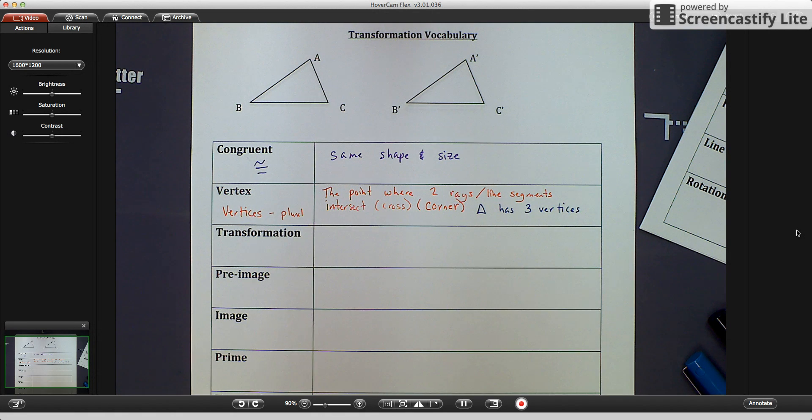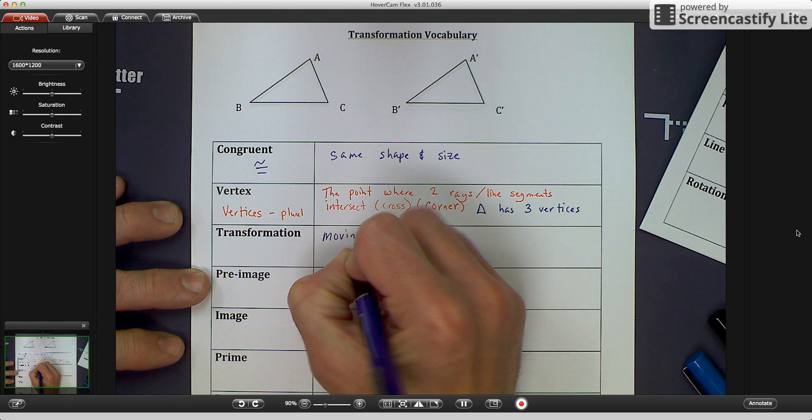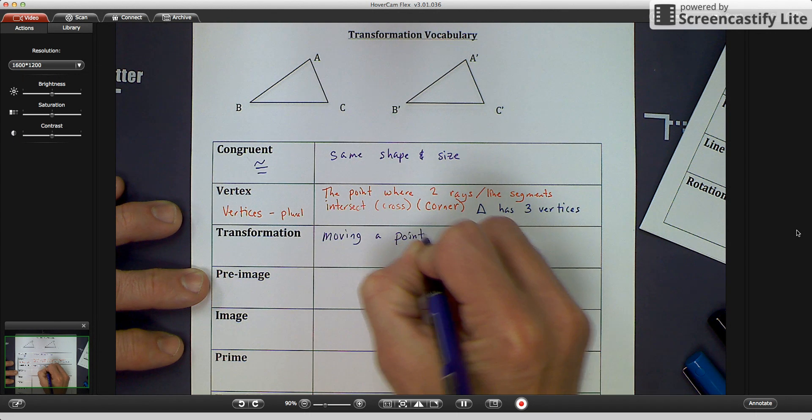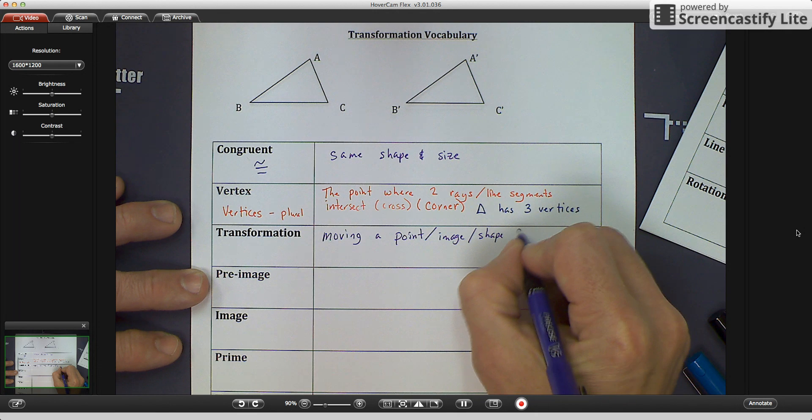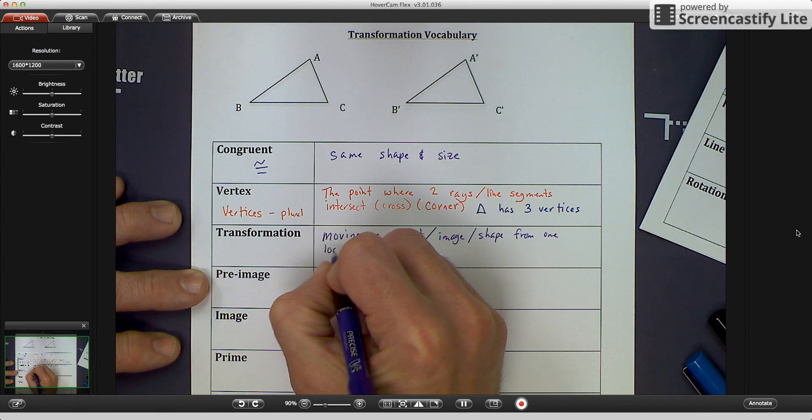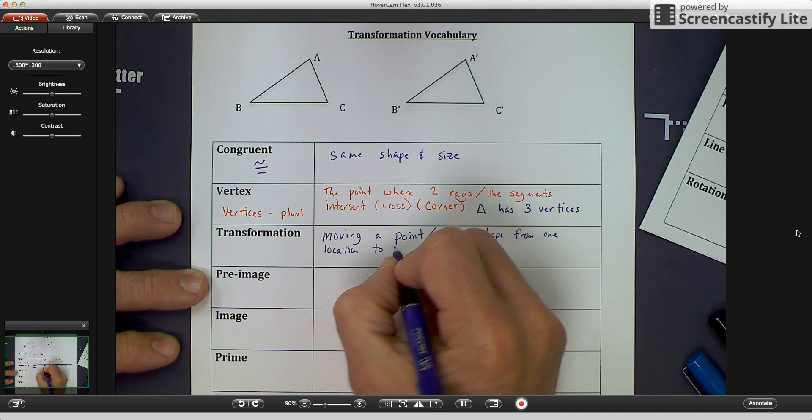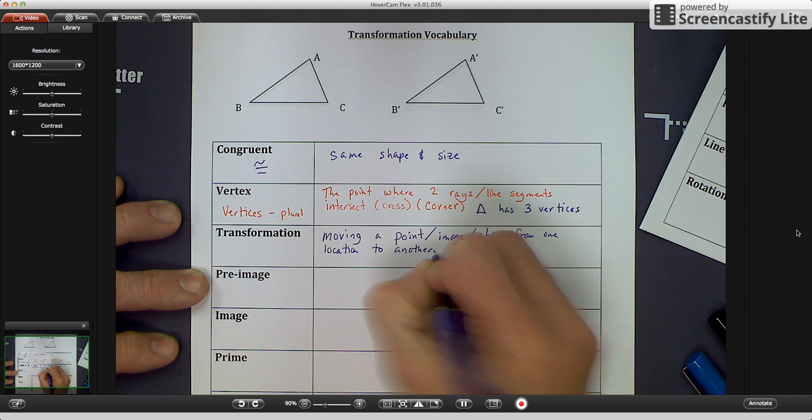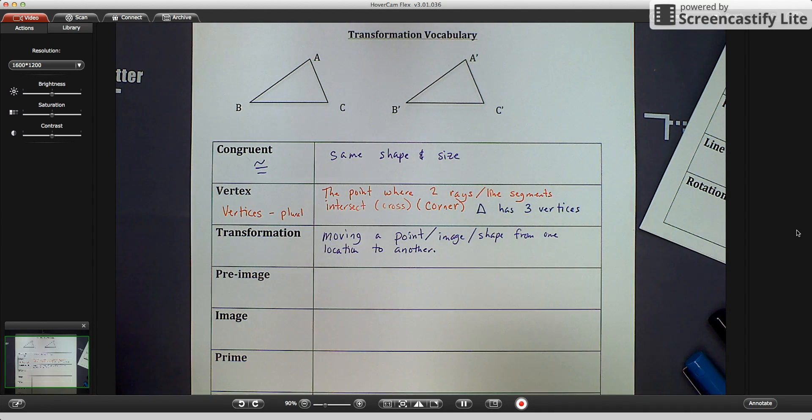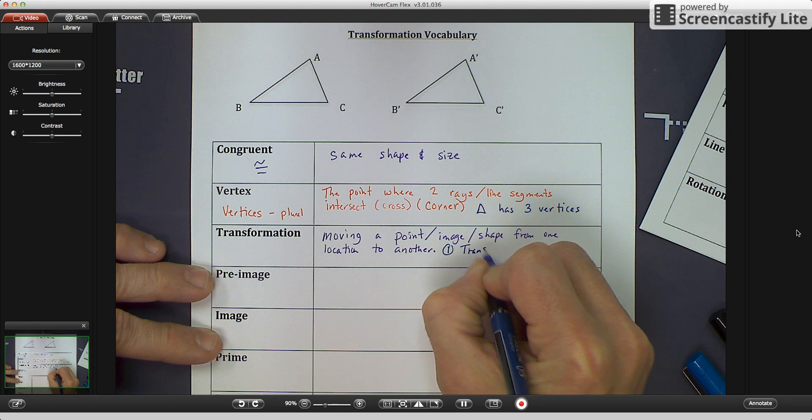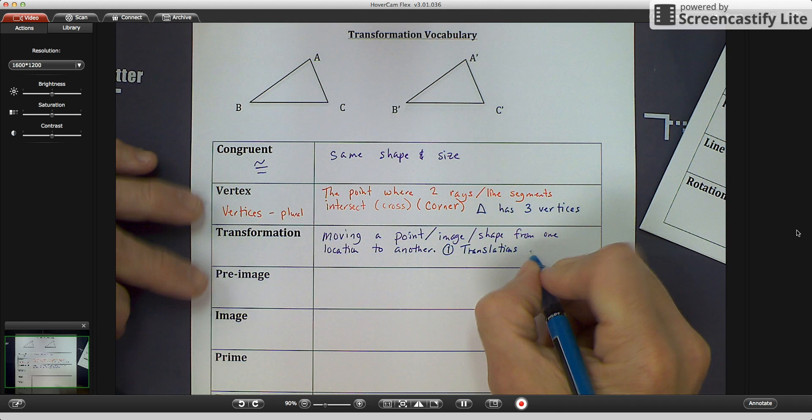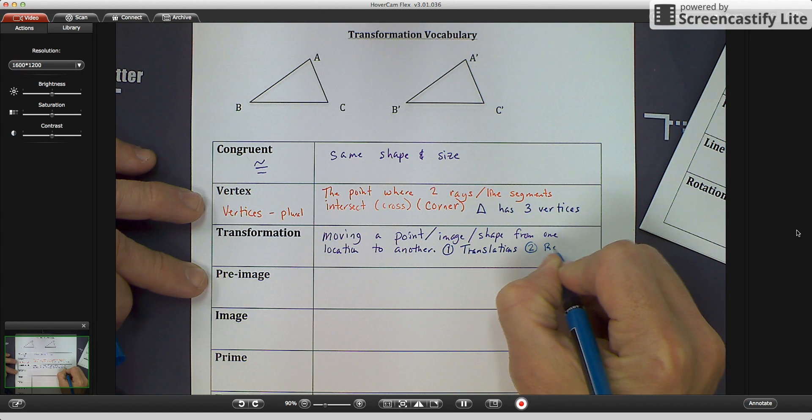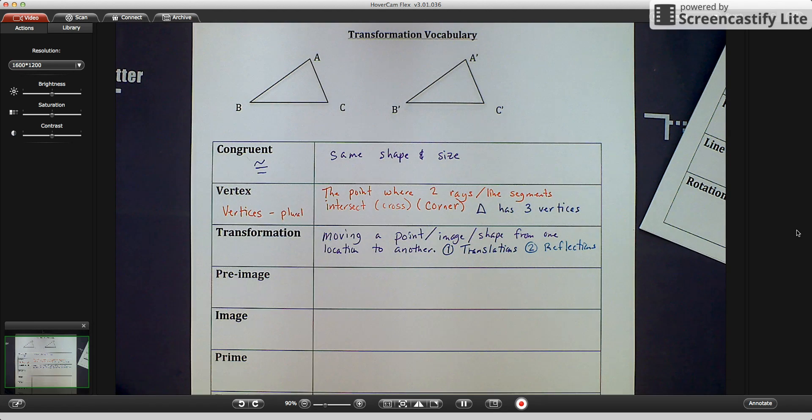The word transformation is also a new one, and that's the title of the unit. So a transformation is moving a point, image, or shape from one location to another. There are three different types of transformations that we're going to do. The first one that we're going to talk about is translations. The second one, reflections, and the third one, rotations.